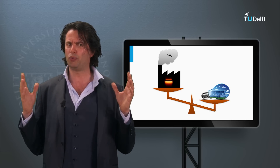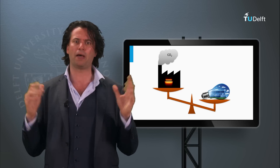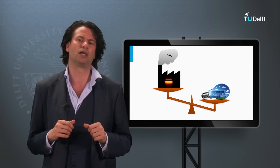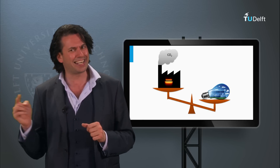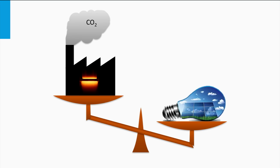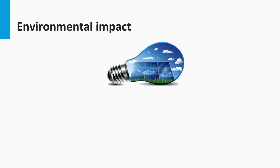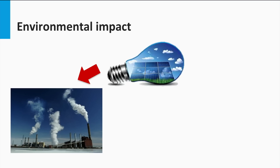But how exactly do we quantify the environmental impact of the PV systems? How do we measure if they are having a positive impact in their lifetimes? There are multiple ways of doing this. A lot of people try to measure the carbon footprint or the carbon emissions caused due to the manufacturing of the PV panels, and then compare with the carbon emissions offset by the panels during their lifetimes.